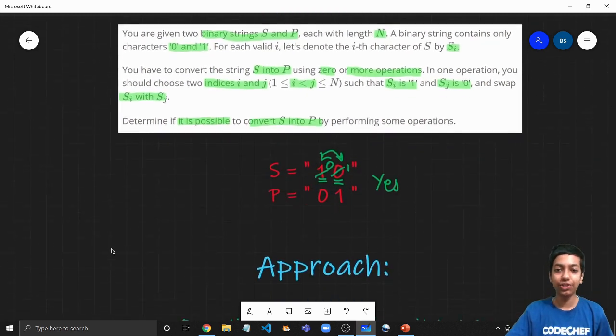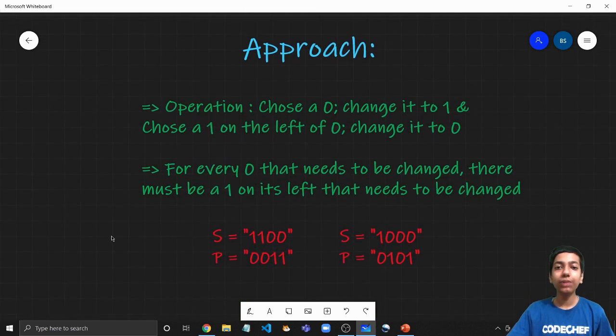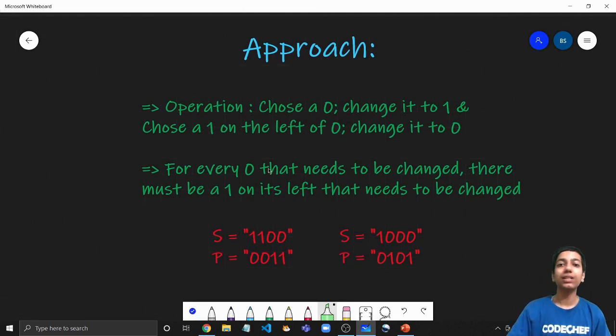And now let us discuss the approach and how we are going to solve the question. So let me just quickly rephrase the question so that it becomes a little clearer to us. Now notice that choosing a 0 and choosing a 1 and swapping both of them is nothing but choosing a 0 and changing it to 1 as well as choosing a 1 and it should be on the left of 0 as well and change it to 0. Because if 0 and 1 are being swapped, so now 0 will become 1 and 1 will become 0. So in other words, I can also say that 1 operation is nothing but to choose a 0 and simply change it to 1. We are just ignoring the complications of swapping. So 0 becomes 1 and 1 becomes 0 in 1 operation where this should also be taken care that the 1 is on the left of 0.